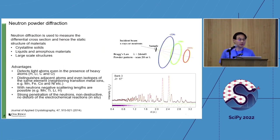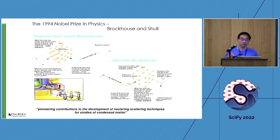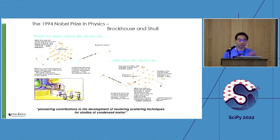Let me give some background about the work we are doing. We work at the Spallation Neutron Source at Oak Ridge National Lab. In 1994, the Nobel Prize in Physics was awarded to Brockhouse and Shull for their pioneering contributions to the development of neutron scattering techniques for studies of condensed matter. Basically, people can use neutrons to detect where the atoms are in a crystal by diffraction. This is elastic diffraction — a neutron is deflected by the nuclei. Some neutron energy can also be lost to the lattice, which we call inelastic scattering, and you can map the energy loss to vibration or phonon modes of the material.